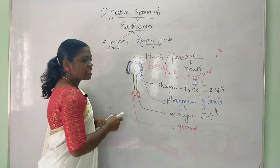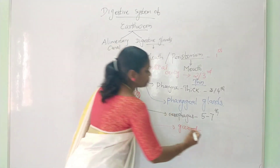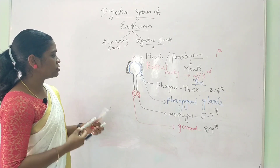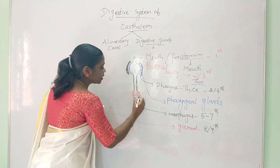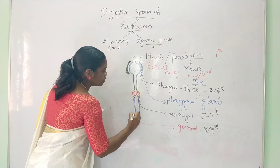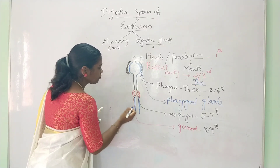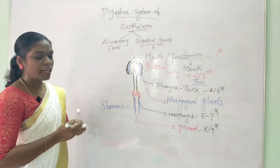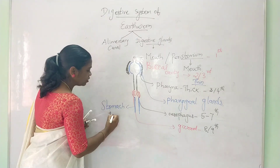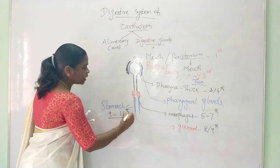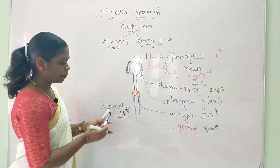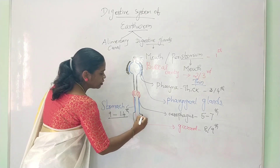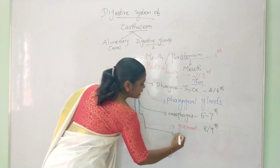The Gizzard is present in the 7th to 9th segment. Following the Gizzard, the stomach is present and connected to the region. It is a bit wider, and this wider region is called the intestine.